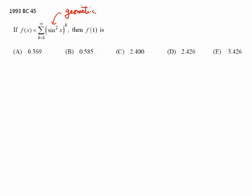Since it's a geometric series, when k equals 1, we're going to get sine of x. a equals sine squared of x, and then your r is also going to be sine squared of x.